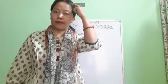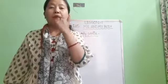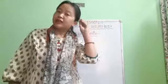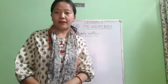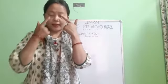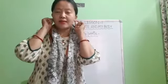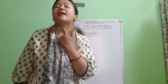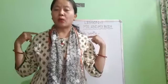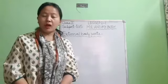The head is the uppermost part of our body. The ear, eyes, nose, forehead, mouth, and chin are different parts of the head. These are our eyes, this is our nose, this is our mouth, these are our ears, this is our chin, this is our neck, these are our shoulders, these are our hands, these are our fingers, this is our stomach, and this is our chest.